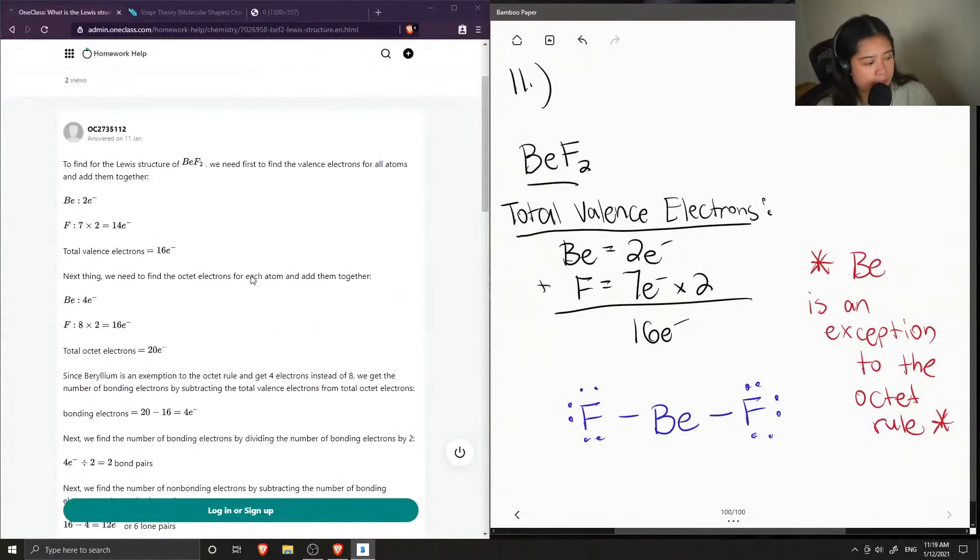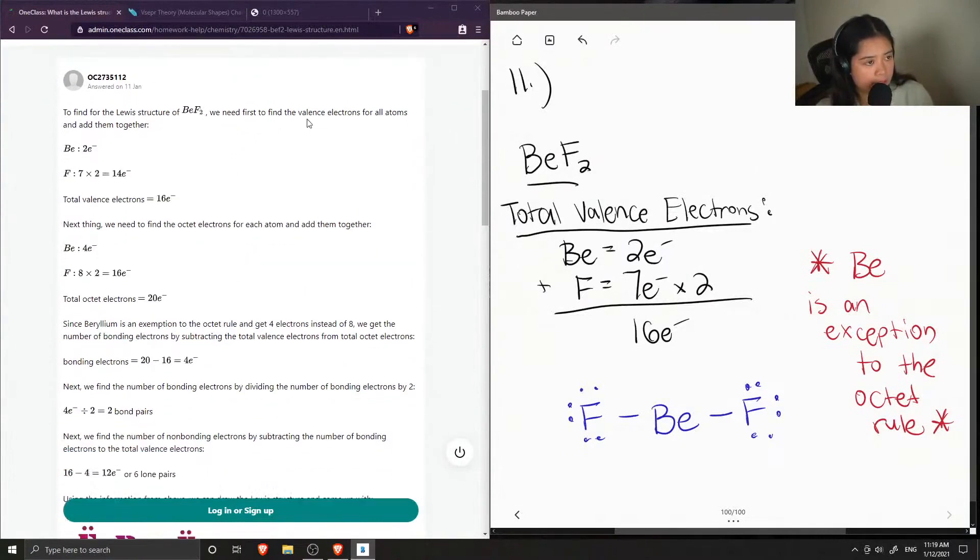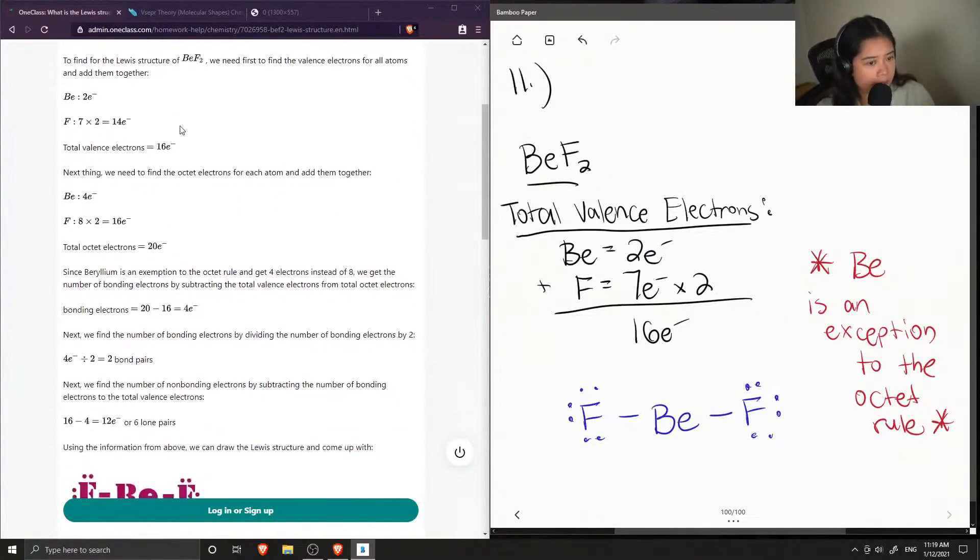And we'll see what the junior tutor said. To find the Lewis structure of BeF2, we need first to find the valence electrons for all the atoms and add them together. So they got 16.